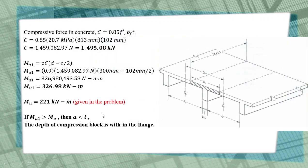Since we determined that the depth of compression block is within the flange by comparing MU1 > MU, we proceed to step number 2. If the opposite occurred, where the depth of compression block is greater than the value of t or greater than the thickness of the slab, then we would proceed to step number 3.